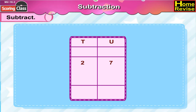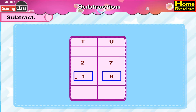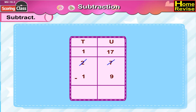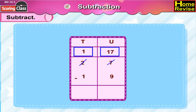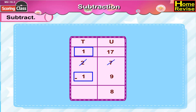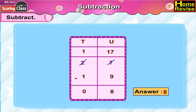27 minus 19 — that is 2 tenths 7 units minus 1 ten 9 units. 9 cannot be subtracted from 7, so we untie 1 ten from the 2 tenths, making it 1 ten 17 units. 17 minus 9 is 8, and 1 ten minus 1 ten is 0, so 27 minus 19 is 8.